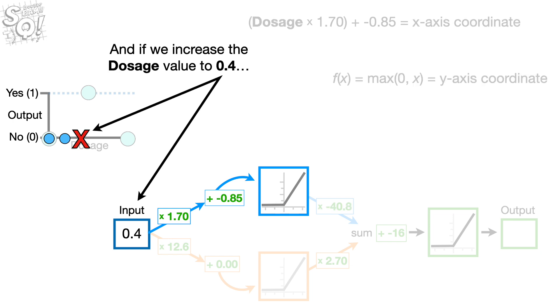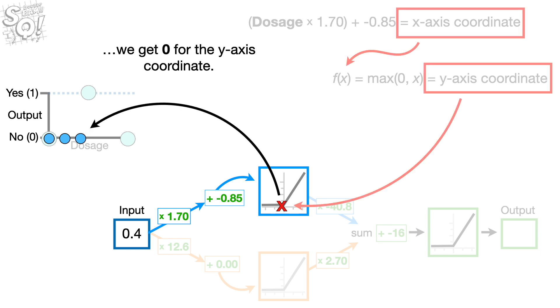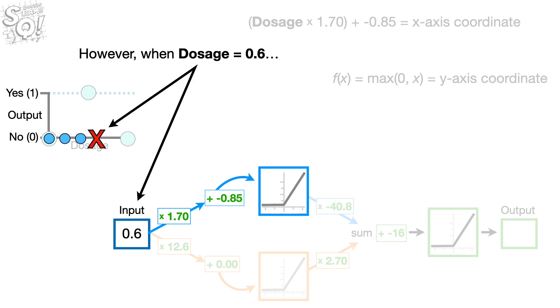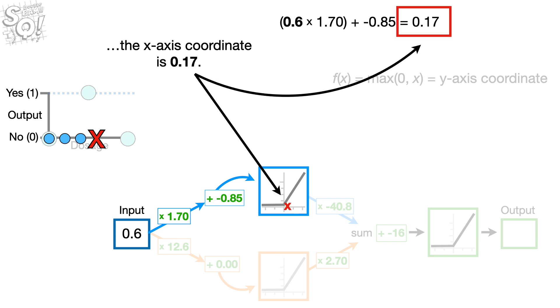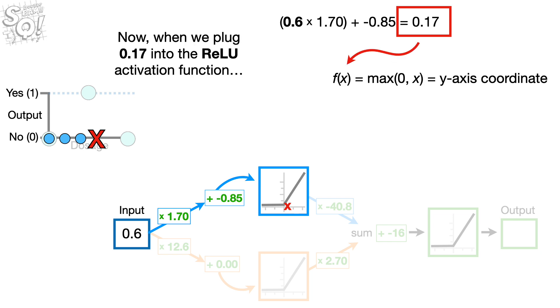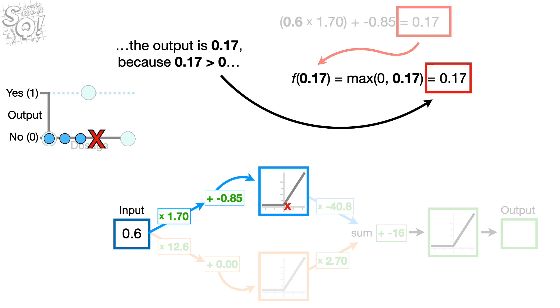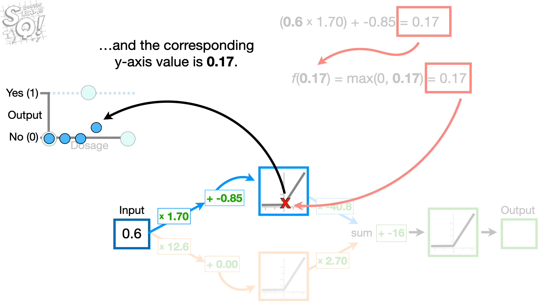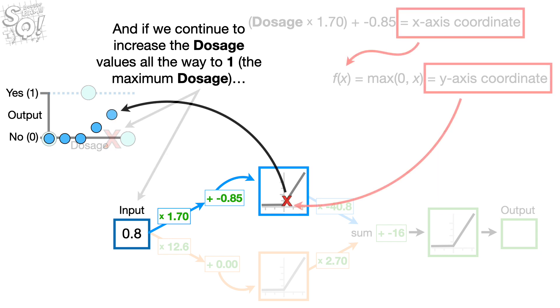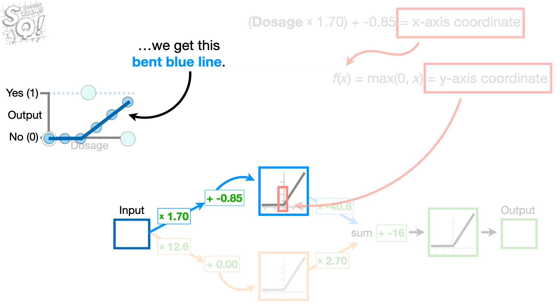And if we increase the dosage value to 0.4, we get 0 for the y-axis coordinate. Again. However, when dosage equals 0.6, the x-axis coordinate is 0.17. Now, when we plug 0.17 into the ReLU activation function, the output is 0.17 because 0.17 is greater than 0. And the corresponding y-axis value is 0.17. And if we continue to increase the dosage values all the way to 1, the maximum dosage, we get this bent blue line.